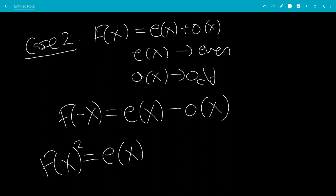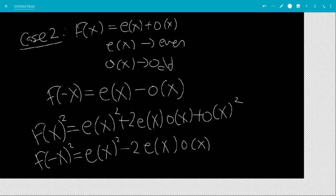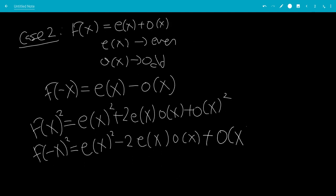That would be e(x)² + 2e(x)o(x) + o(x)². And let's do f(-x) squared. So this would be e(x)² - 2e(x)o(x) + o(x)².